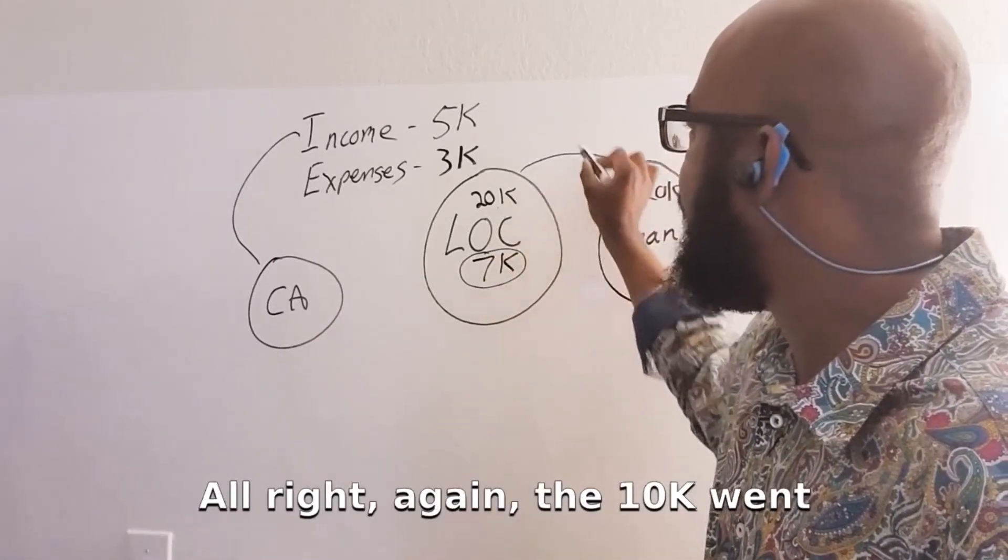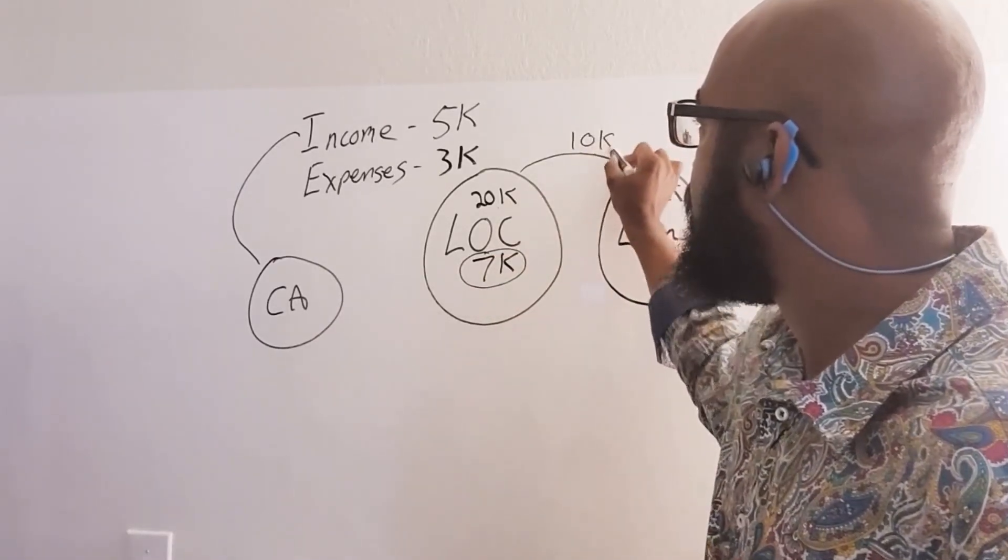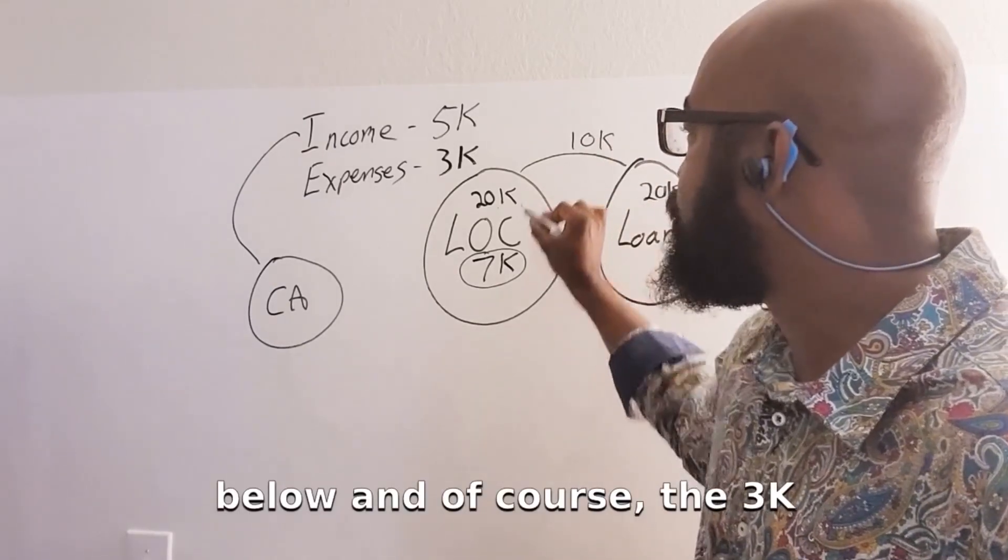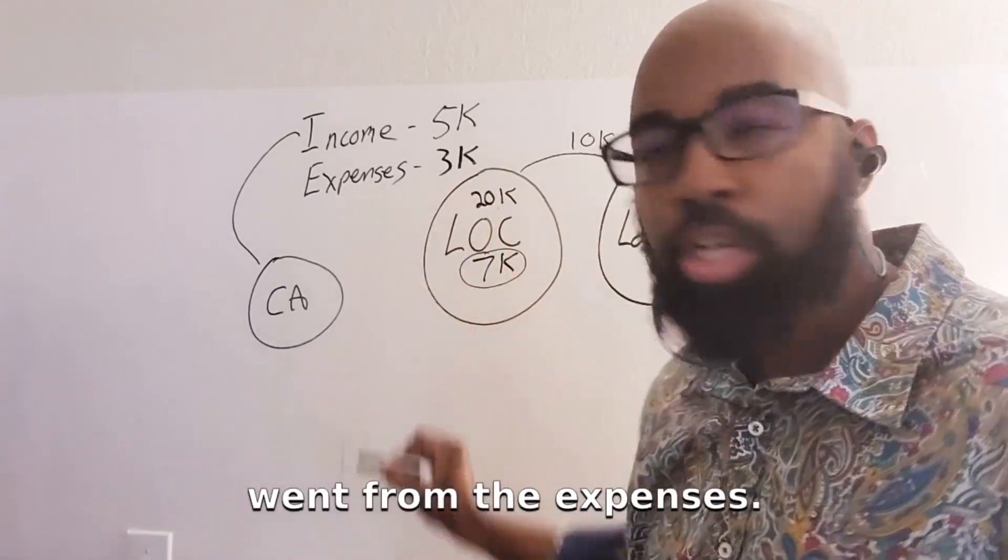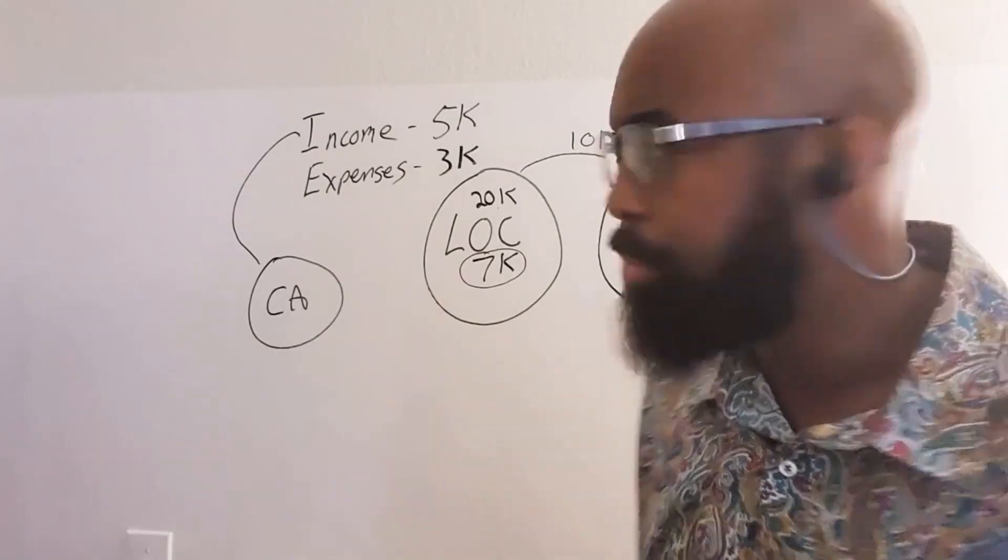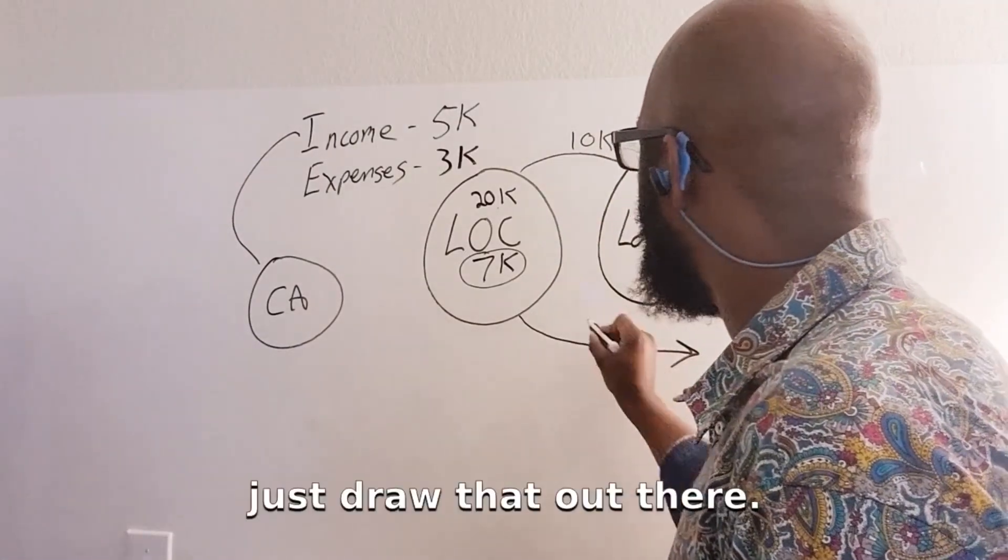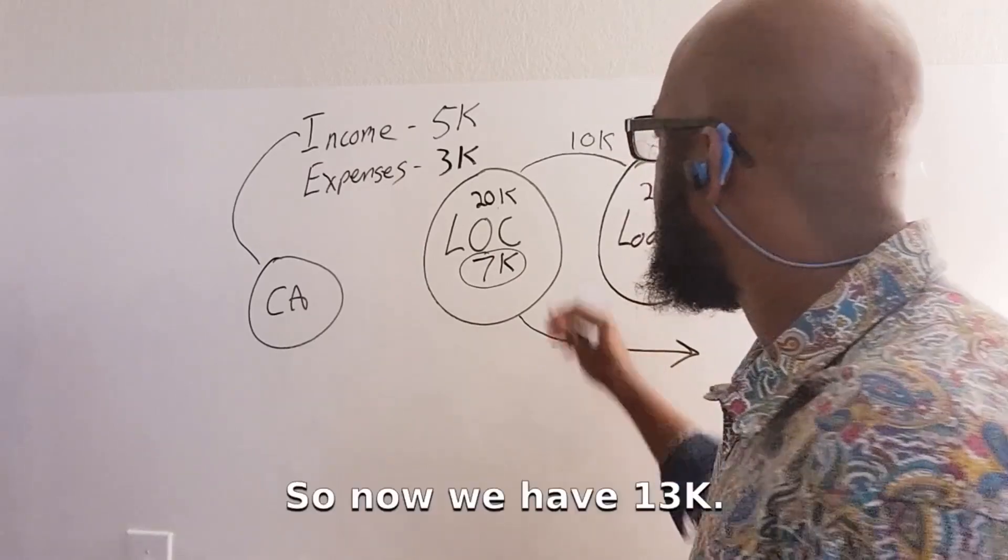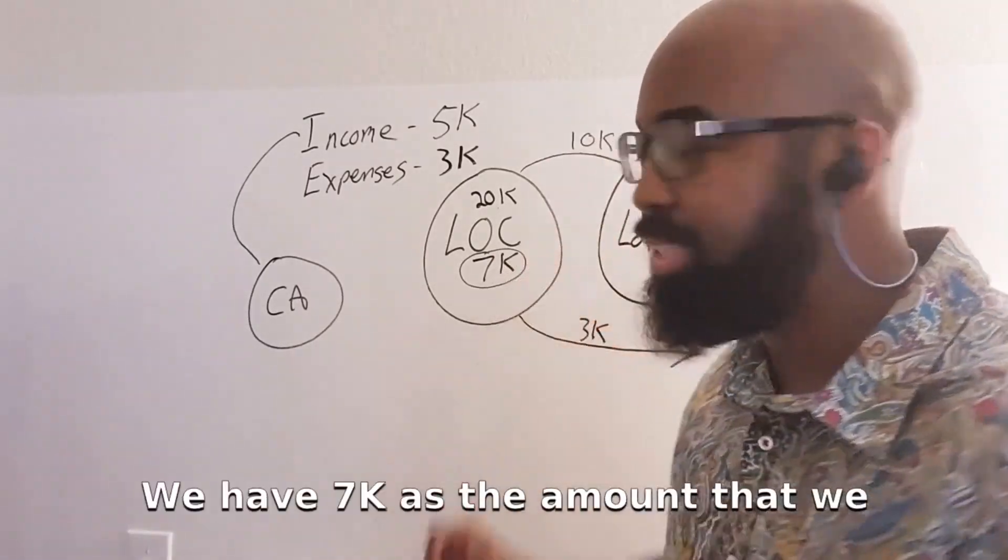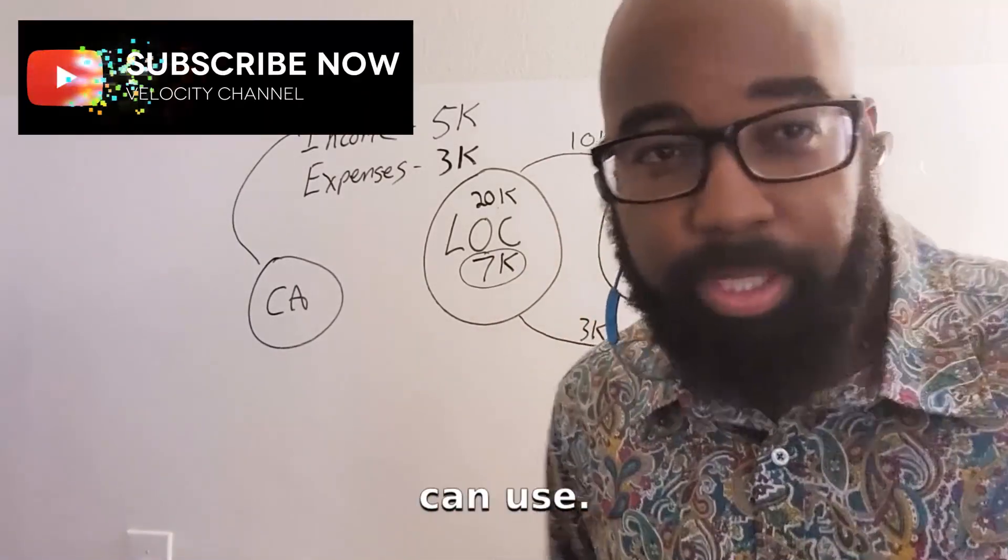Again, the 10K went to the loan, and of course, the 3K went from the expenses. So now, just draw that out there. So now we have 13K, we have 7K as the amount that we can use.